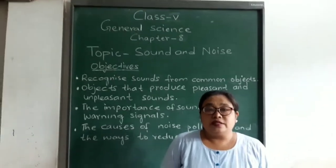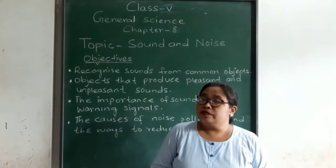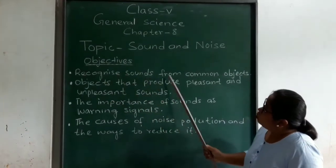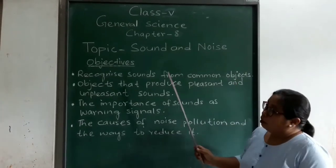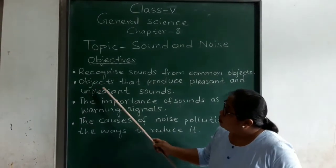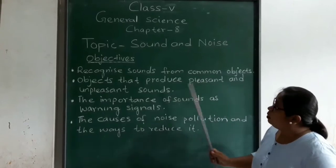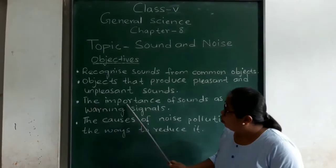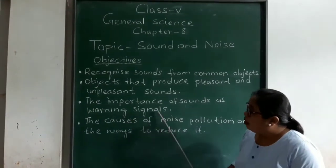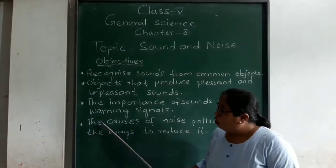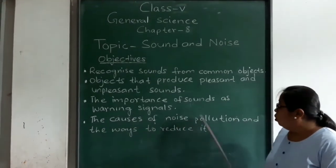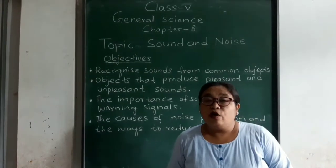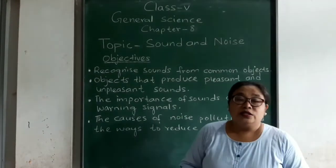This chapter has four objectives. They are: recognize sounds from common objects; objects that produce pleasant and unpleasant sounds; the importance of sounds as warning signals; and the process of noise pollution and the ways to reduce it. These are the four objectives which we are going to learn today.